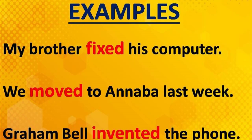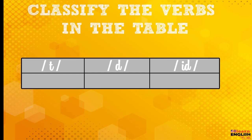If I ask you to classify these three verbs in this table according to their pronunciation: Fixed, this ED is pronounced /t/. When we use slashes, it's the pronunciation. It's written ED, but the pronunciation is /t/. Moved is /d/. Invented is /id/. The ED is pronounced /t/ here, /d/ here, and /id/ here.